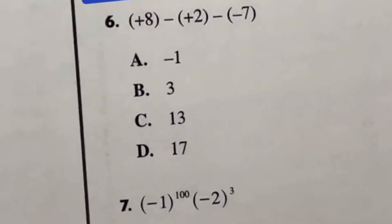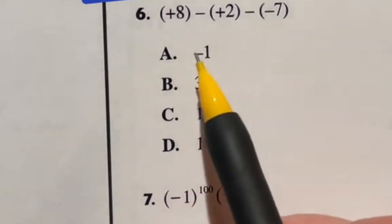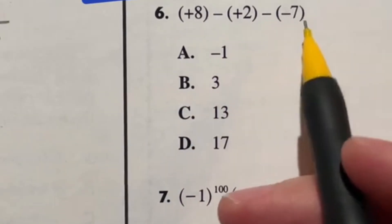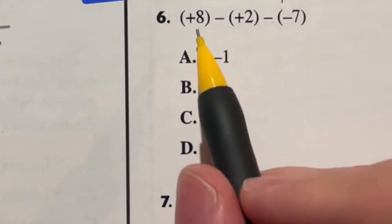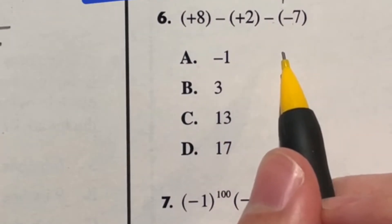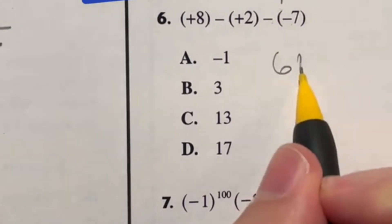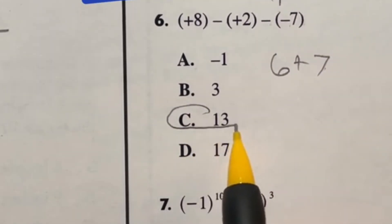Two for one. Let's go ahead. It says perform the indicated operations. So we have a positive eight minus positive two minus negative seven. Well, minus negative just makes it positive. So we got eight minus a positive two, which is going to give us six, then minus negative makes plus seven. So six plus seven, well, six plus seven is 13. So our answer is going to be C.